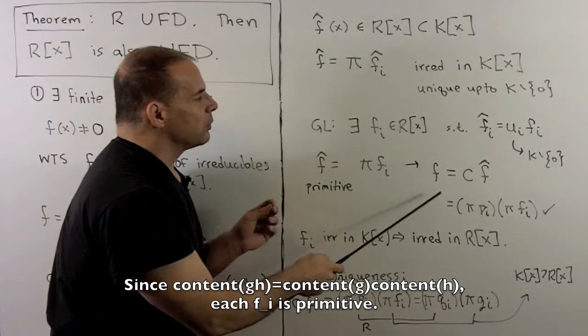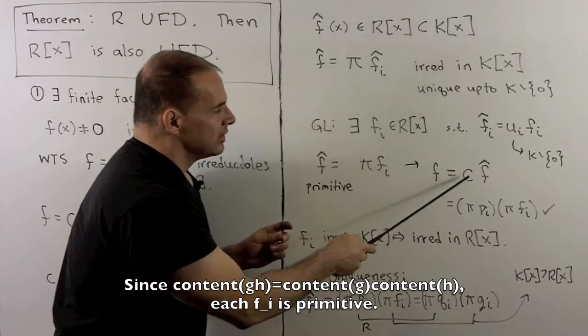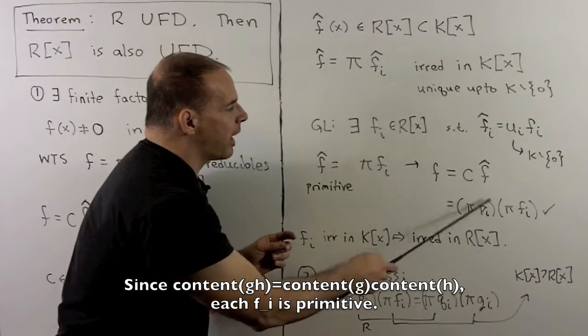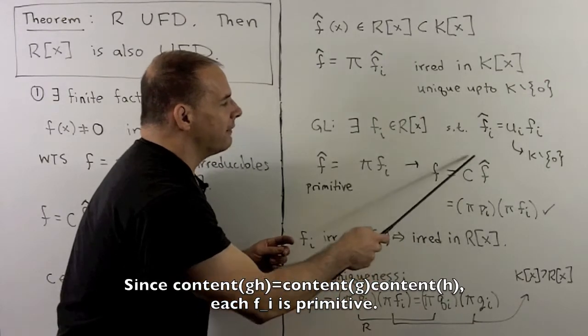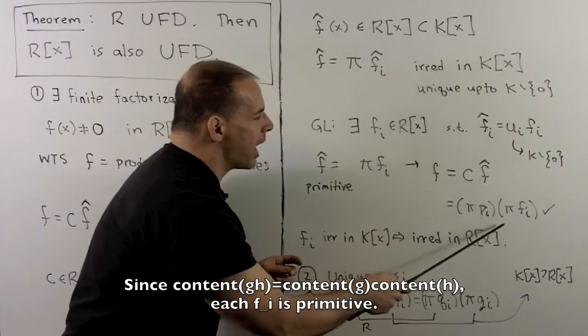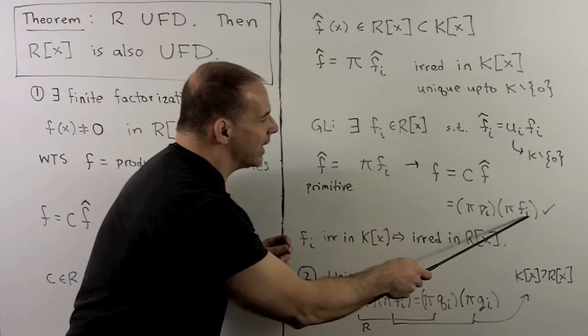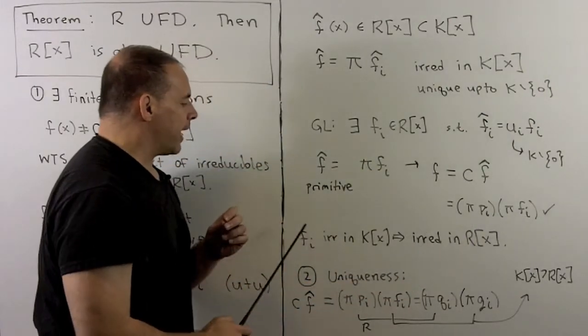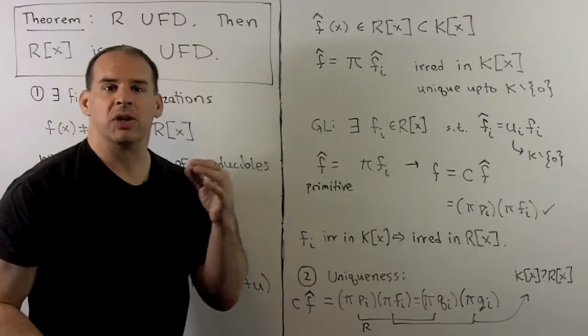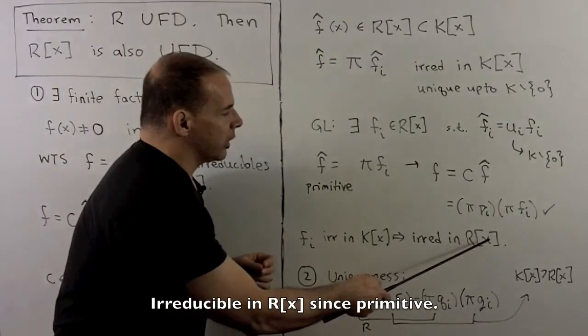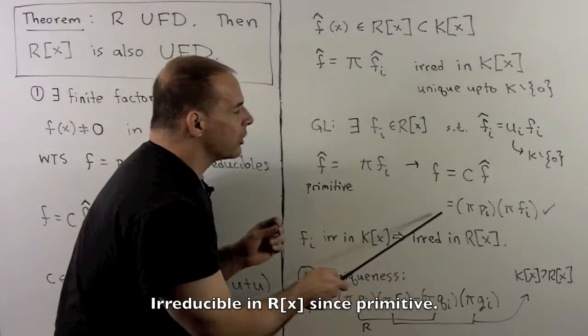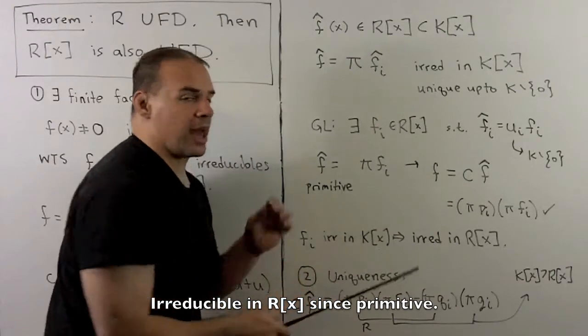We also have that f̂ equals the product of the fᵢ's. Now, f is equal to c times f̂. We have c factoring into a product of primes in R. f̂ factors into a product of the fᵢ's. But we know the fᵢ's are irreducible in K adjoin x, so they must be irreducible in R adjoin x. So that gives our factorization into irreducibles, as we wanted.